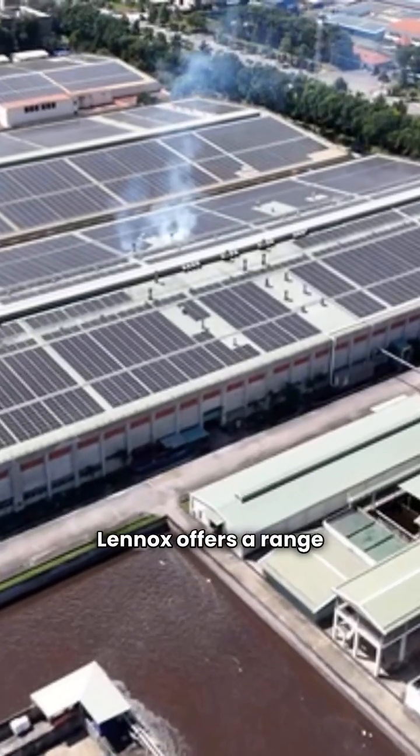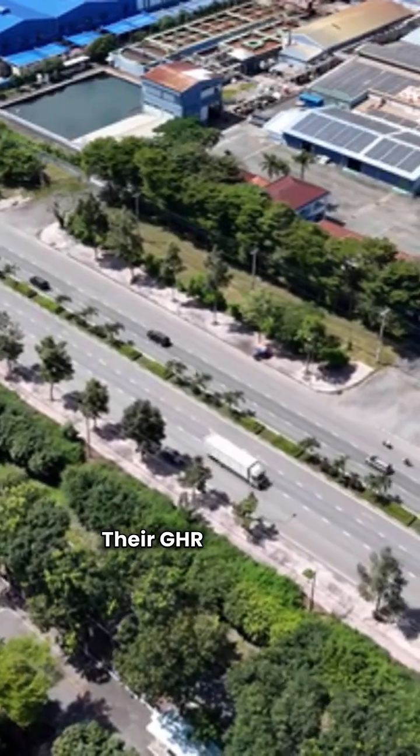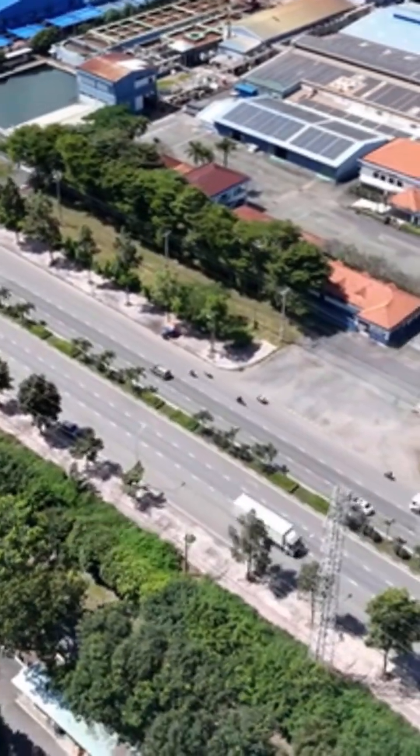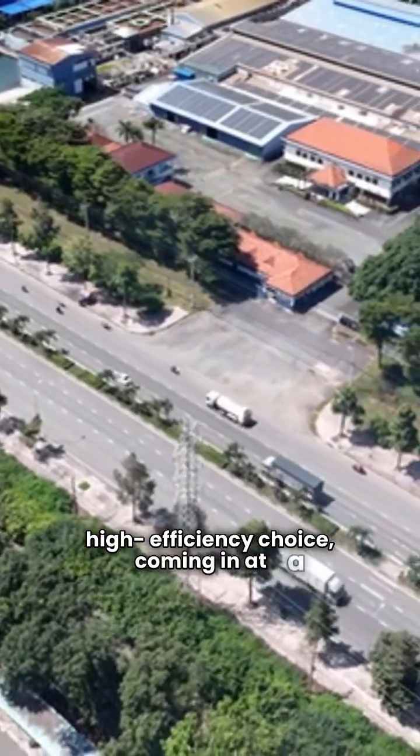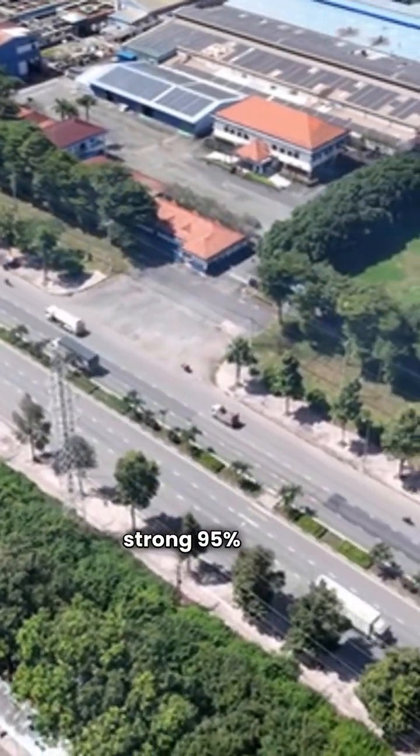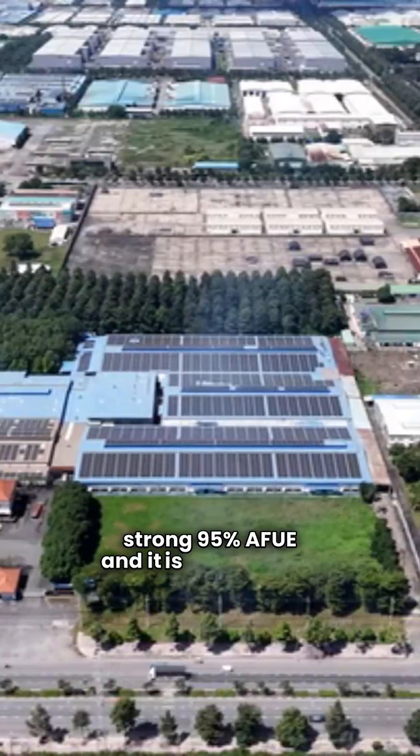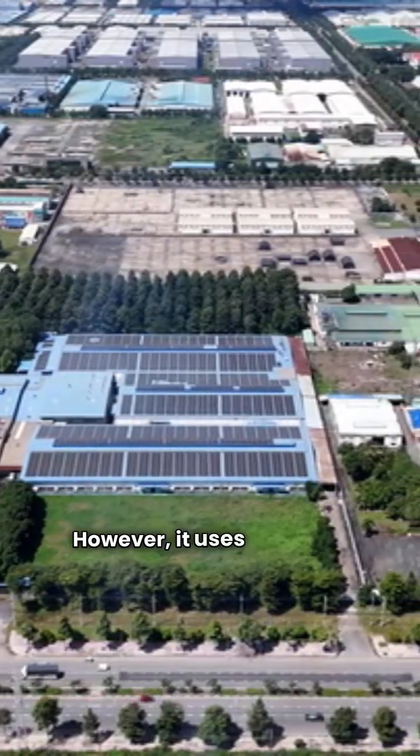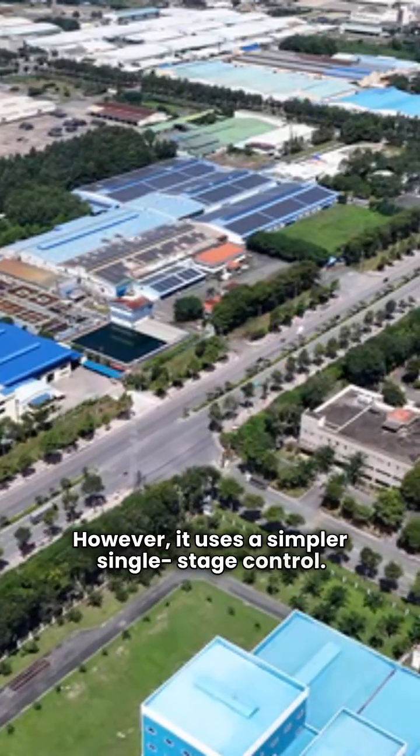Now for Lennox. Lennox offers a range of models. Their GHR gas water boiler is their high efficiency choice, coming in at a strong 95% AFUE, and it is condensing. However, it uses a simpler single-stage control.